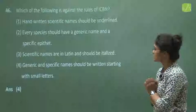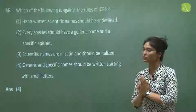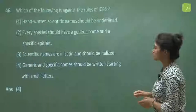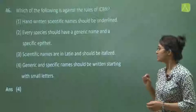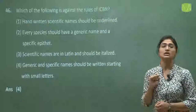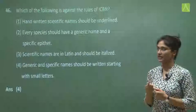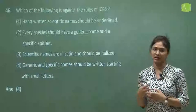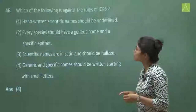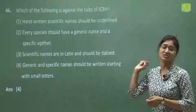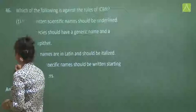The third option says specific scientific names are in Latin and should be italicized — this is also correct. The fourth option says generic and specific names should be written starting with small letters. However, the generic name should start with a capital letter, like in Mangifera indica we write capital M. So the fourth option is against the rules of ICBN, and the answer is option four.